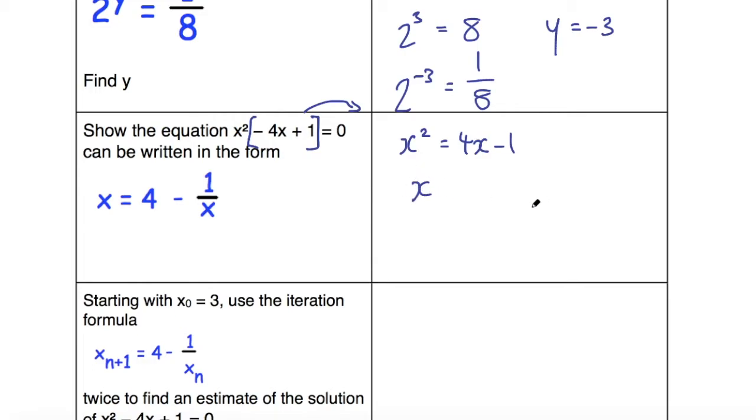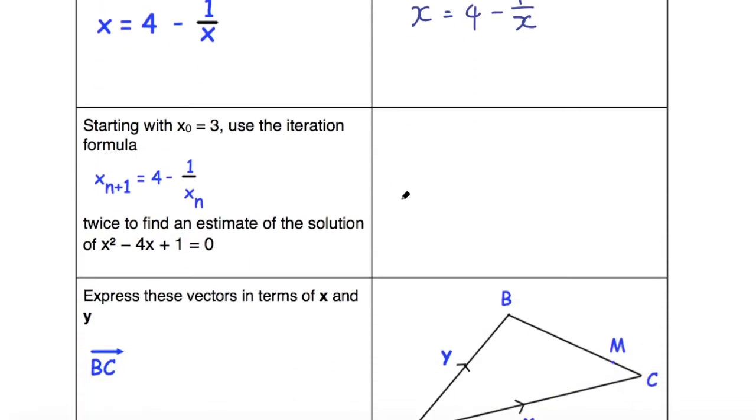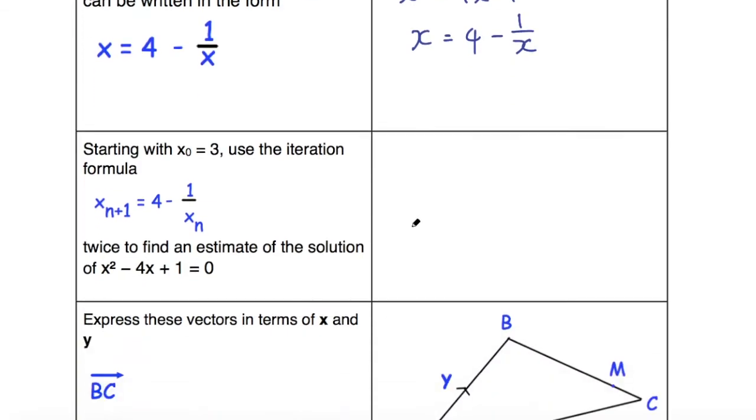And 4x divided by x is 4, and 1 divided by x is 1/x. So there you have the answer here. I've taken two steps to get there, and that should be fine for an exam situation. Usually just a one-mark question, those ones.